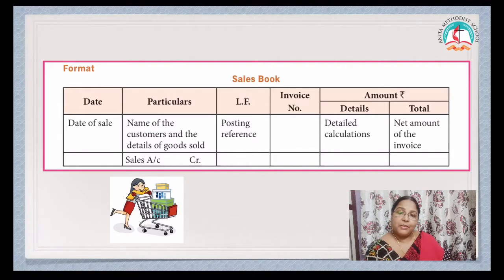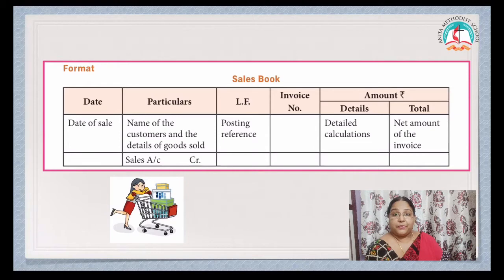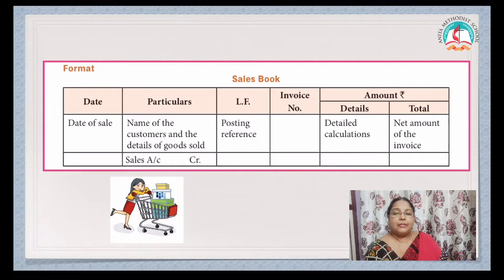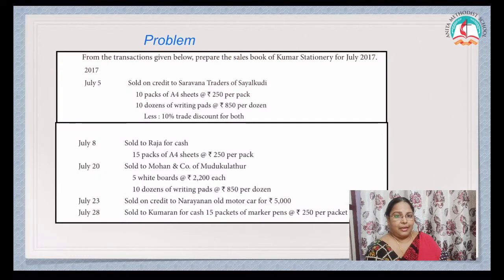This is the format of your Sales Book — the same as the Purchases Book. Date: when the transaction took place. Name of the customer to whom we have sold. What discounts are allowed and how much he has to pay. LF, that is the ledger folio. Invoice number. Amount and Amount — here given as Details and Total, but we can just have it as Amount and Amount.